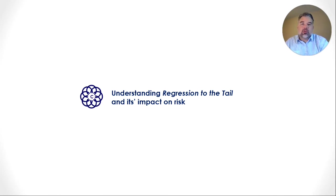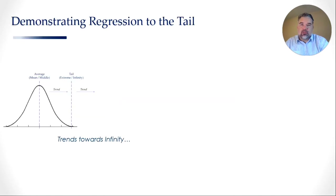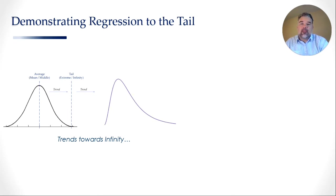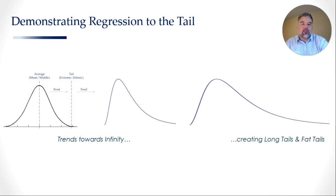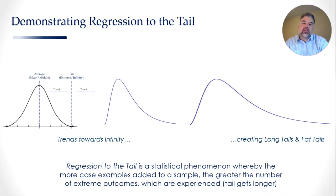Just as a reminder, regression to the tail basically says that the more case examples you throw into a sample population, the more the average or the tail will start trending outwards towards infinity. What you get is an elongated tail that starts to stretch out — eventually you get what's known as a long tail or a fat tail outcome. So regression to the tail is a statistical phenomenon whereby the more case examples added to a sample, the greater the number of extreme outcomes which are experienced. In other words, the tail gets longer.